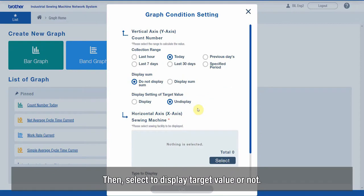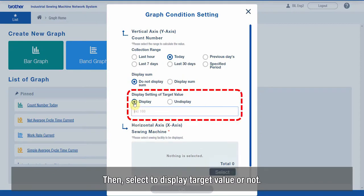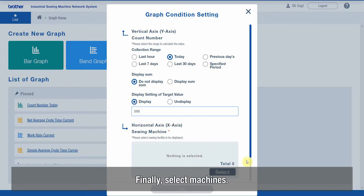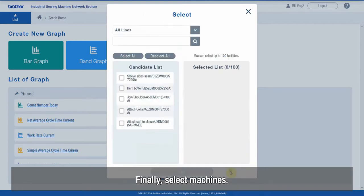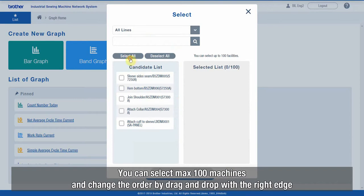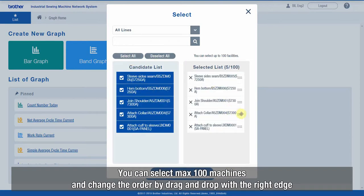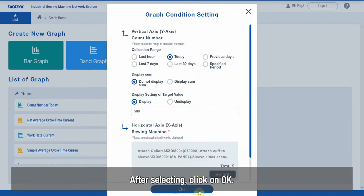Then, select to display target value or not. I'll set it to 500. Finally, select Machines. You can select max 100 machines and change the order by drag and drop with the right edge. After selecting, click on OK.